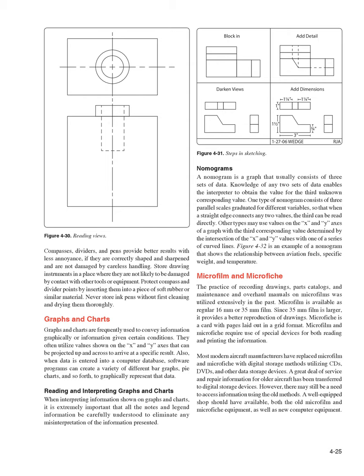Graphs and charts are frequently used to convey information graphically. They often utilize values shown on the x and y axes that can be projected to arrive at a specific result. When data is entered into a computer database, software programs can create bar graphs, pie charts, and so forth to graphically represent that data. When interpreting graphs and charts, it is extremely important that all notes and legend information be carefully understood to eliminate misinterpretation. A nomogram is a graph that usually consists of three sets of data — knowledge of any two enables the interpreter to obtain the value for the third. One type uses three parallel scales graduated for different variables, so that when a straight edge connects any two values, the third can be read directly.